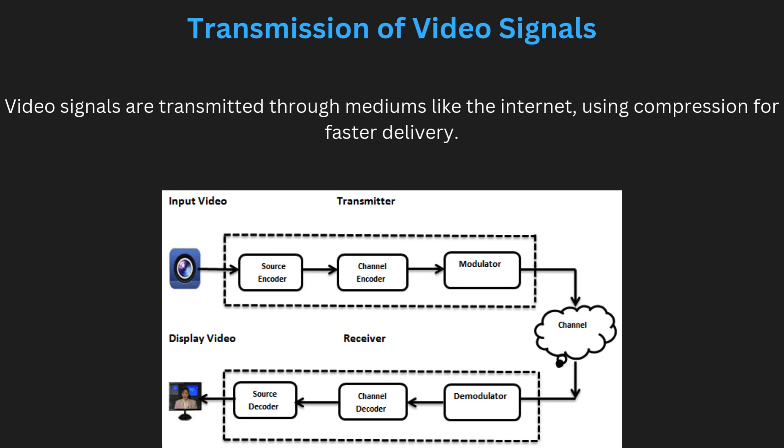Now, transmission of video signals. Transmission involves sending video data from one location to another through various mediums including radio waves, satellite, and the internet. Video streaming platforms like YouTube use the internet to transmit digital video signals to users worldwide. To transmit video efficiently, compression techniques like those used in MPEG are essential — they reduce the amount of data needed while maintaining good video quality, enabling faster transmission over networks.